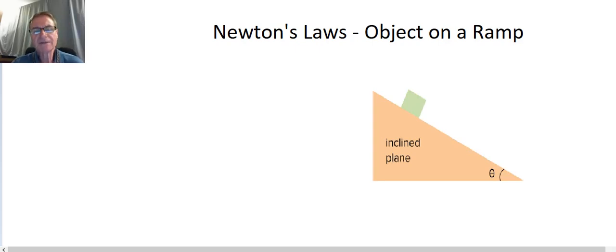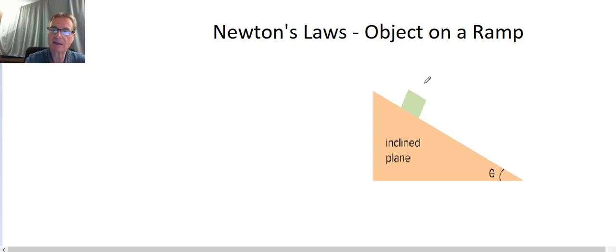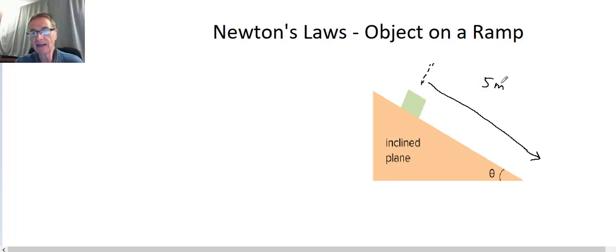Hello and welcome to Doc Onko's Physics. Keith Onko here. What we want to look at today is another one of Newton's Law problems. Today we've got an object on a frictionless ramp, and we'd like to know what the acceleration is going to be as our object goes from the top of the ramp down to the end — assuming that distance is about 5 meters. We'd also like to figure out what the velocity is going to be of our block when it hits the bottom of the ramp.